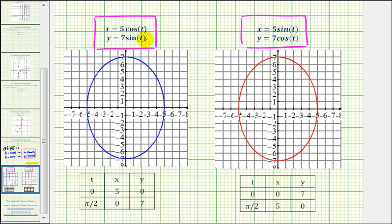But as t increases, the ellipses would be traced using a different orientation. So for example, if we compare the values when t equals 0,